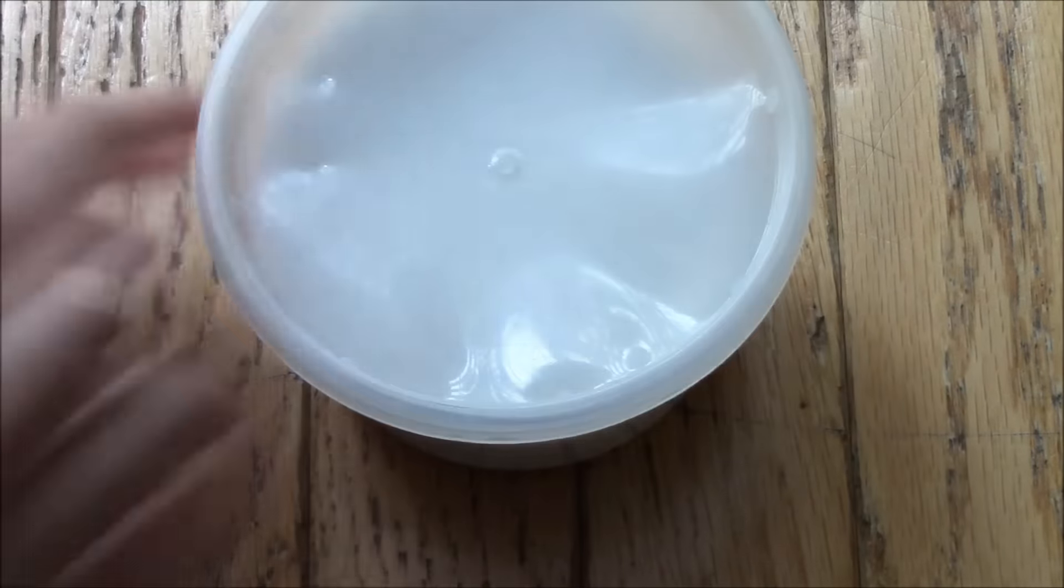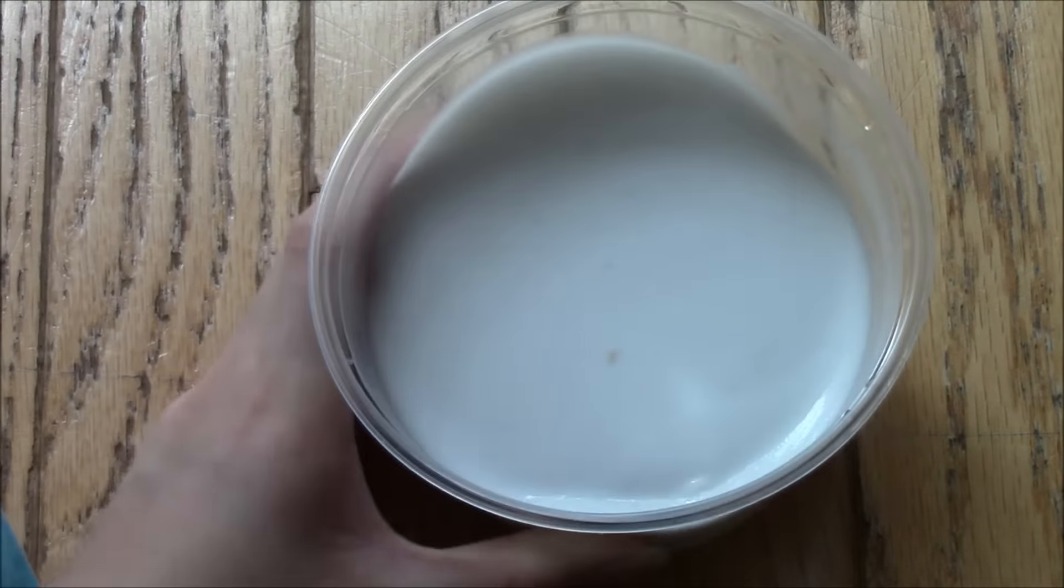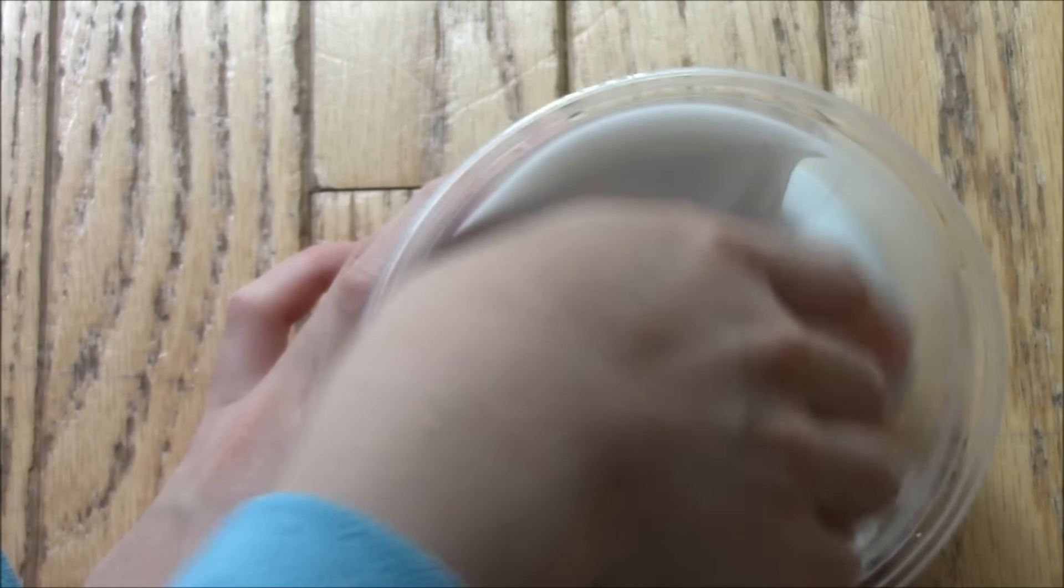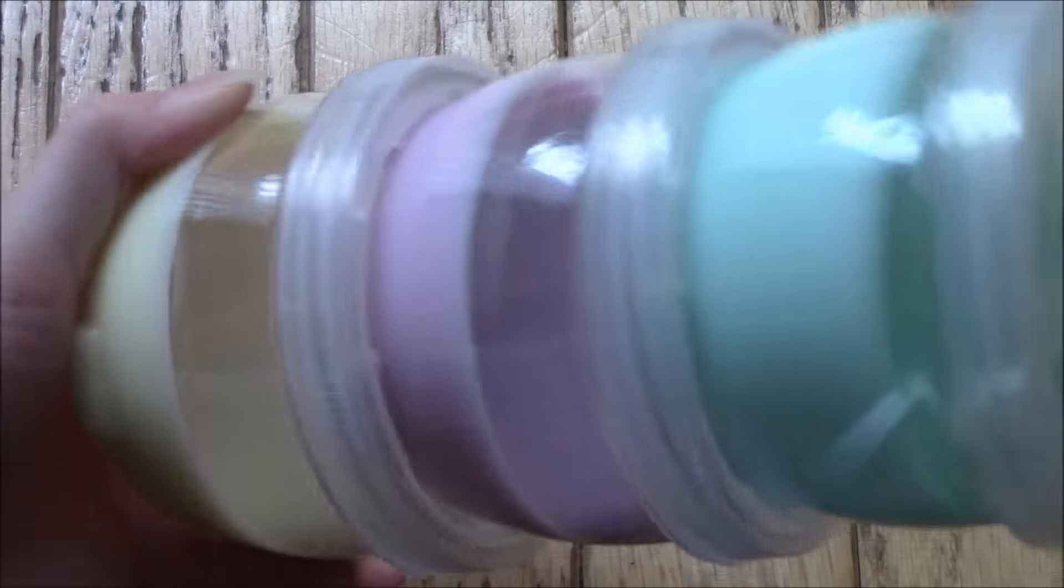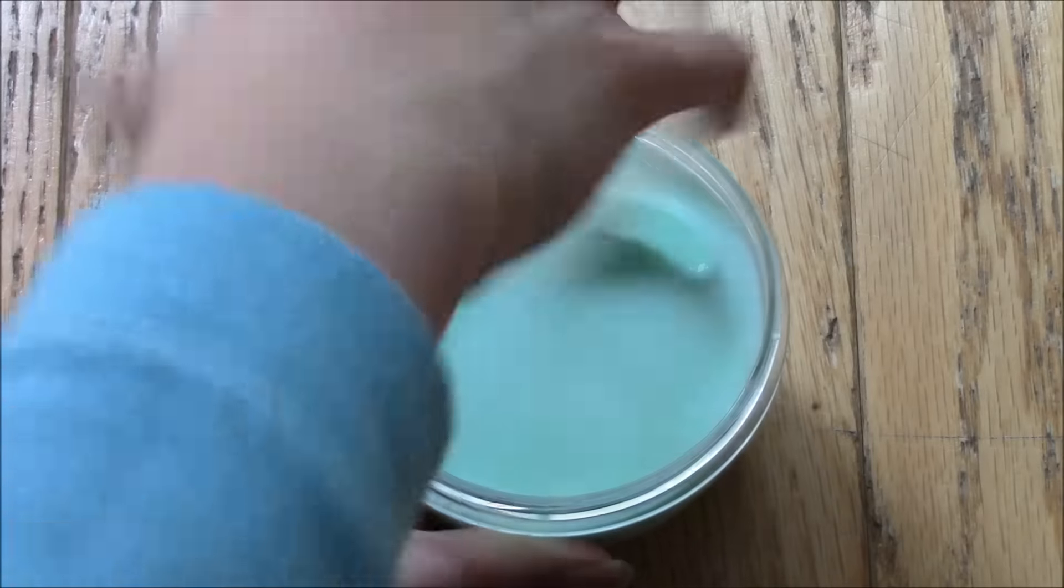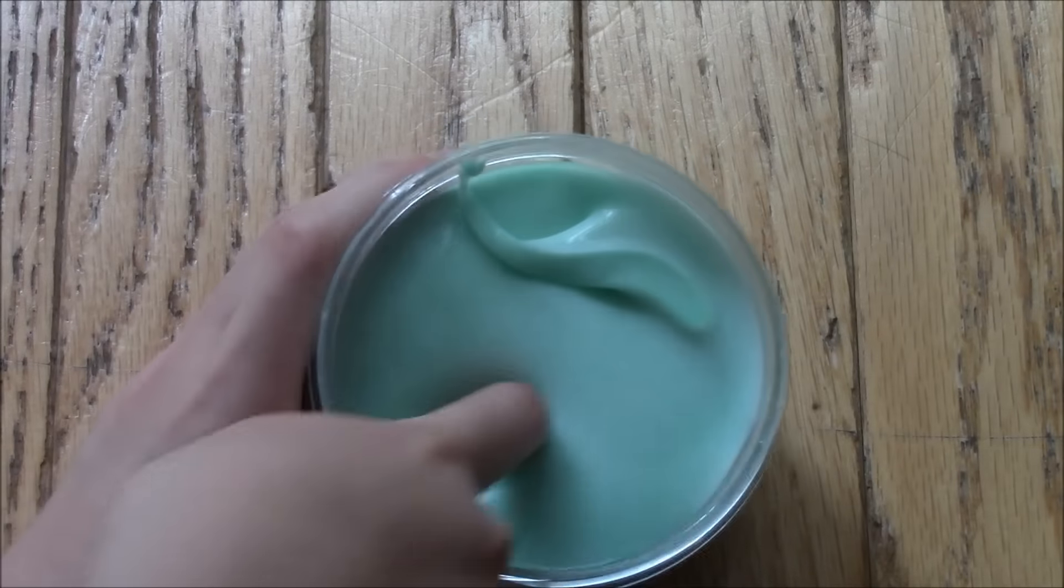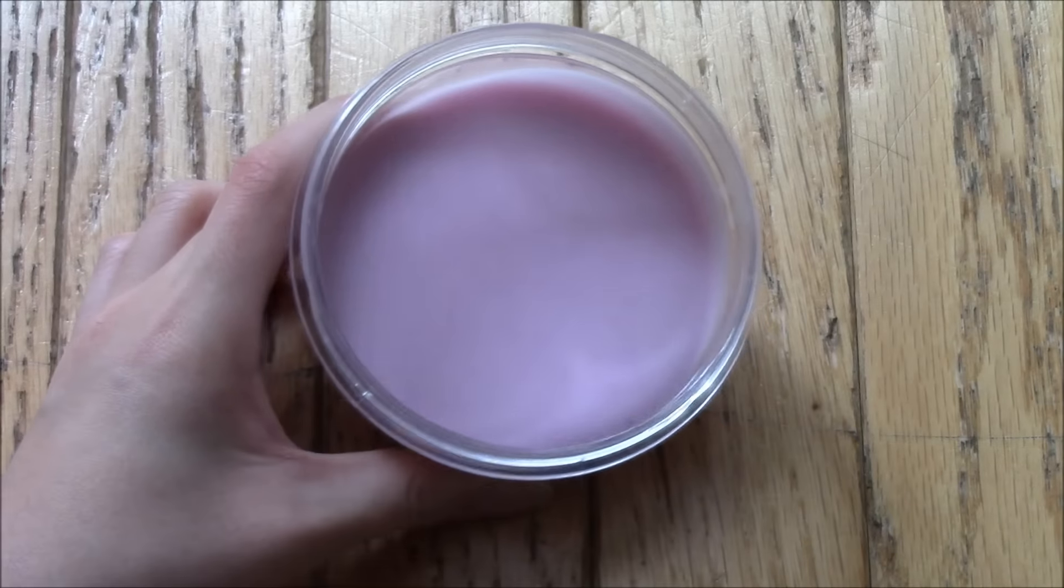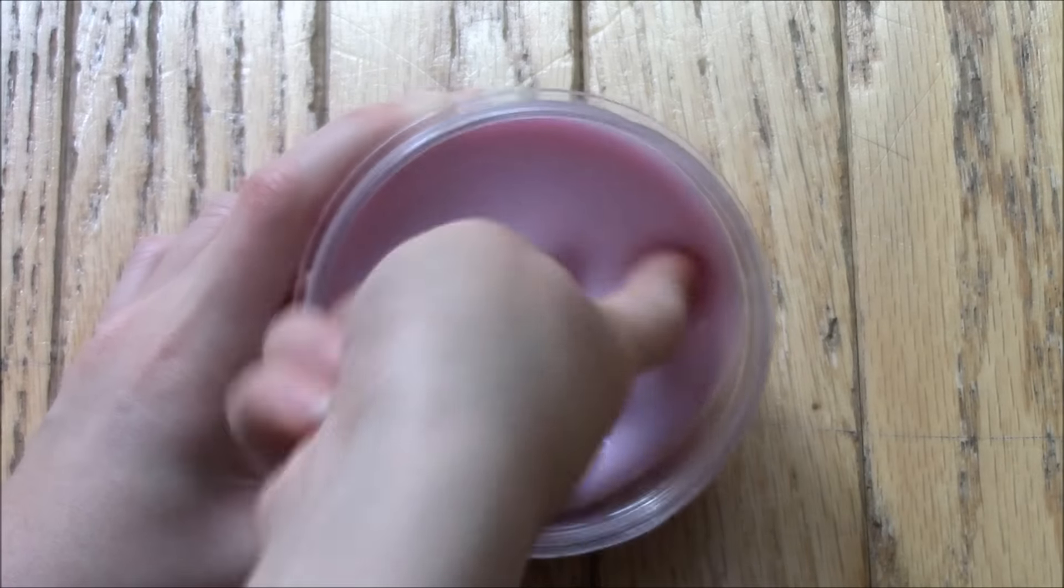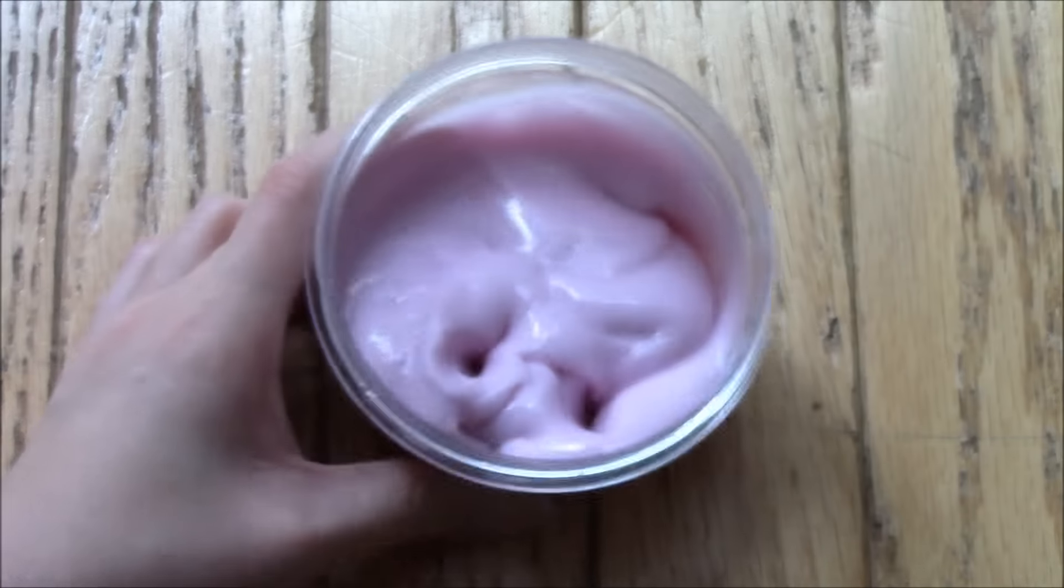Next I have this ginormous, like this is the most slime I have in one container. It's like this white slime. It's really, really, like moist. Then I have these three slimes. It's like really weird and mushy.